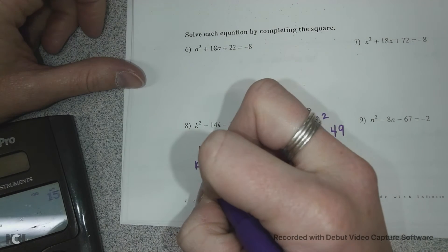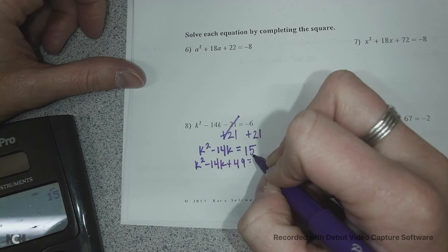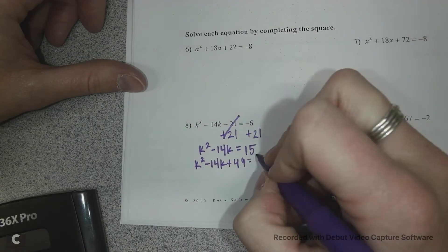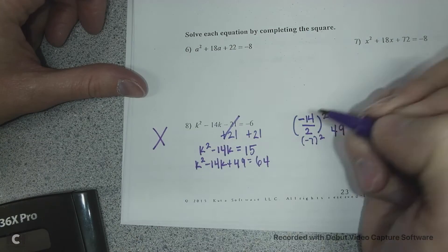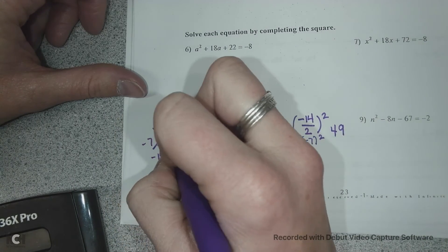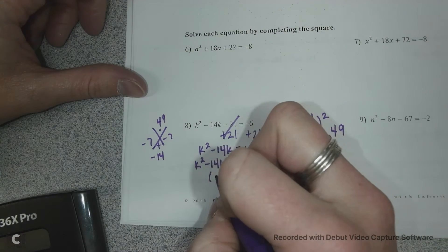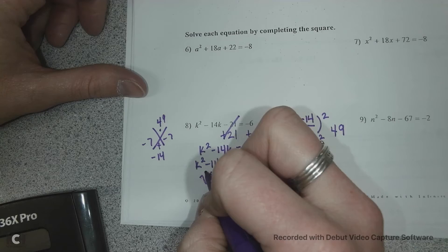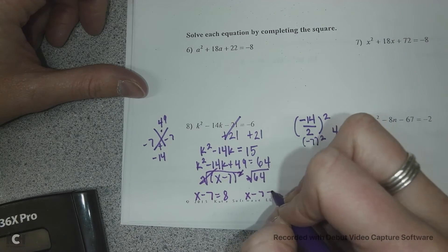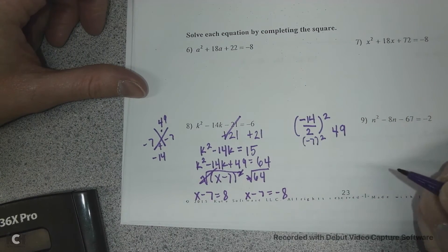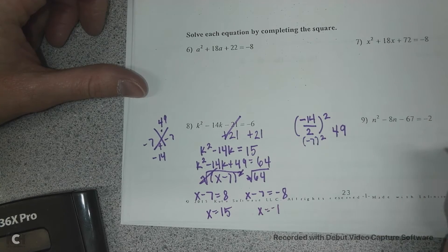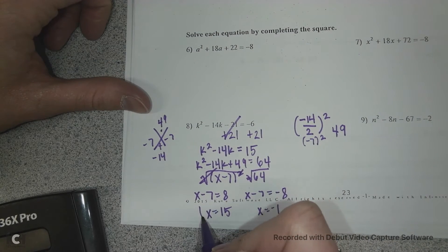So then we have to do negative 14 divided by 2 squared. So negative 14 divided by 2 is negative 7 squared is positive 49. So I'm going to add 49 to each side, and 49 plus 15 is 64. And then we can big x. We're going to multiply to 49 and add to negative 14, which would be negative 7 and negative 7. So those are my two factors. x minus 7 squared equals 64. Square root each side, x minus 7 equals 8, and x minus 7 equals negative 8. Add 7 to each side, so 8 and 7 are 15, and negative 8 and 7 is negative 1.